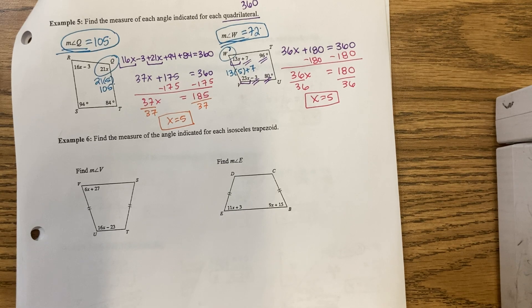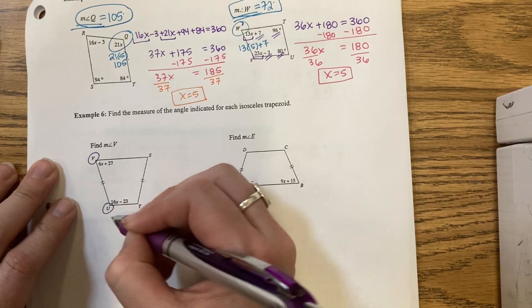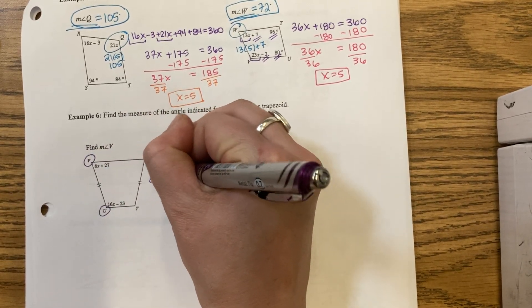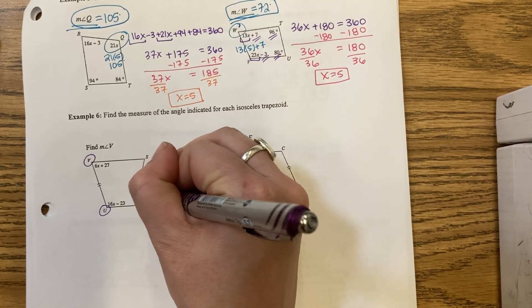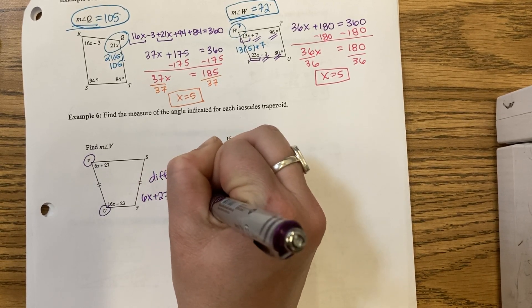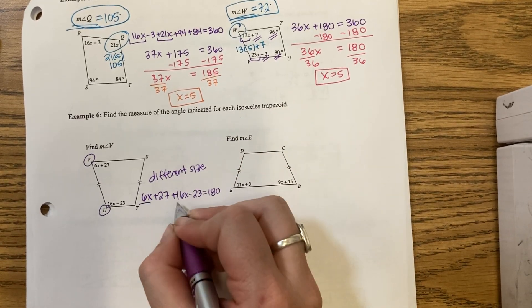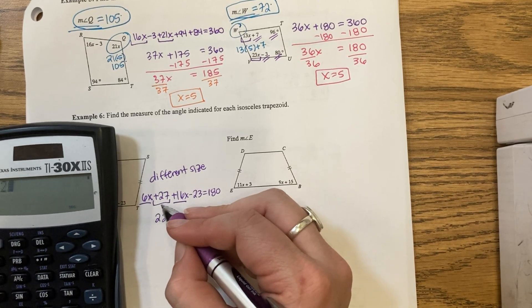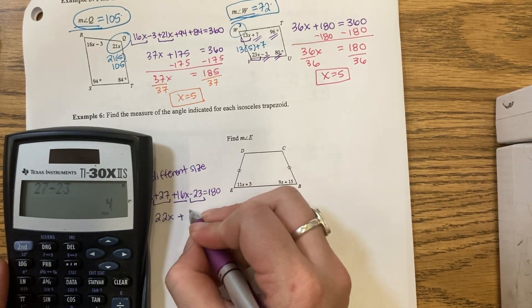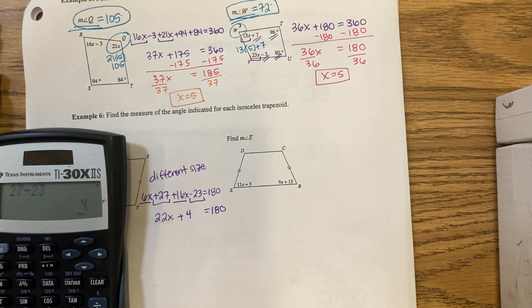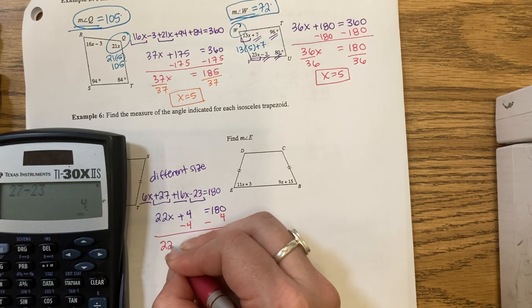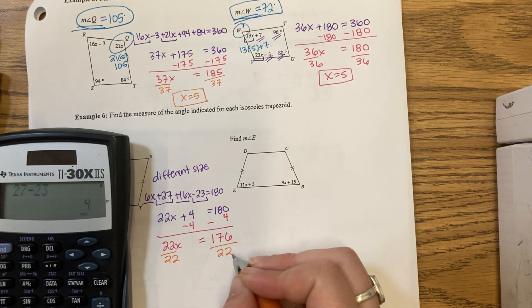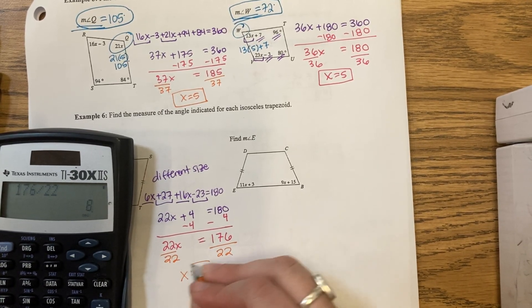We now have an isosceles trapezoid. We are given V and U. We are only given 2, half. Different sized angles. I'm going to say 6x plus 27 plus 16x minus 23 is 180. 6 and 16 can be placed together. I'm going to minus the 4. And then I will divide by the 22. We get an 8.